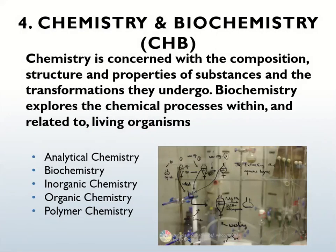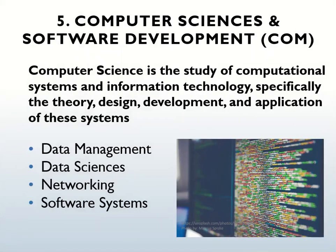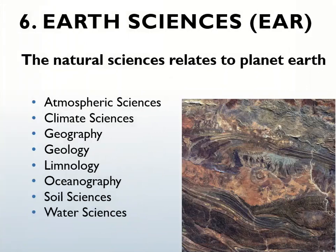The chemistry and biochemistry category has five subcategories. The computer sciences and software development category deals with data management, data sciences, networking and software systems. The sixth category is earth sciences, and its subcategories deal with various aspects related to the study of the earth.